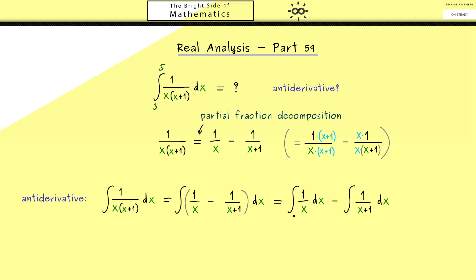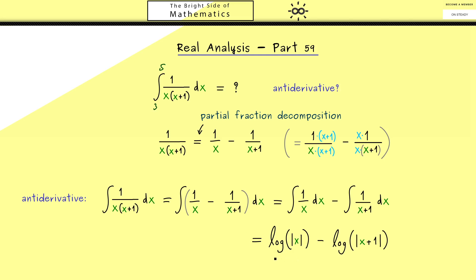Now we have to find the antiderivative of each partial fraction. We already know the derivative of the logarithm is 1 over x, and this also works for negative x if we include the absolute value. In the same way, the antiderivative of the second function is the logarithm of |x+1|. Including the absolute value covers the case that x plus 1 is negative. You can check this by forming the derivative of these two functions.